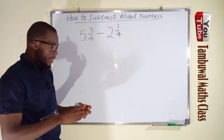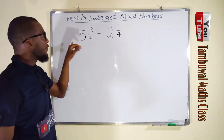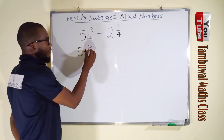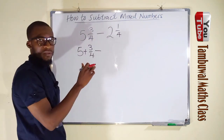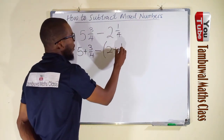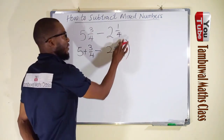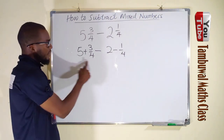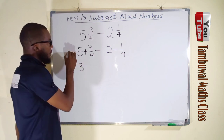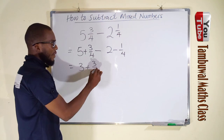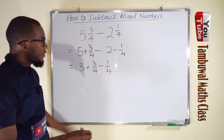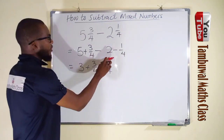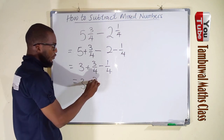Here is our last question: we want to subtract 2 and 1/4 from 5 and 3/4. We split this as 5 plus 3/4, minus the whole bundle (2 plus 1/4). When we remove the parenthesis, the negative sign changes the sign inside: 5 minus 2 is 3, and we have plus 3/4 minus 1/4. Since the denominators are already the same, we just subtract the numerators: 3 minus 1 is 2. So we have 3 plus 2/4.